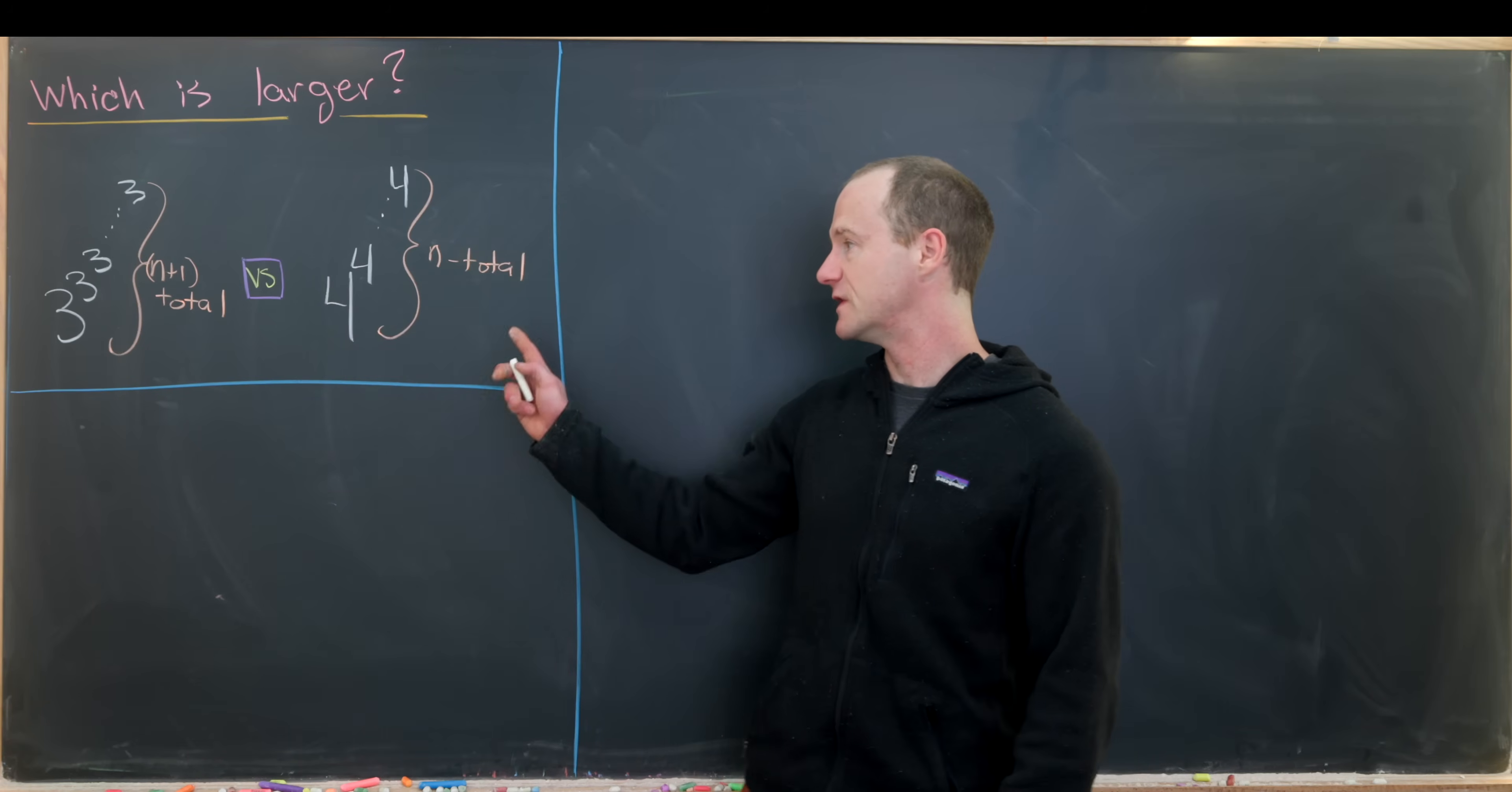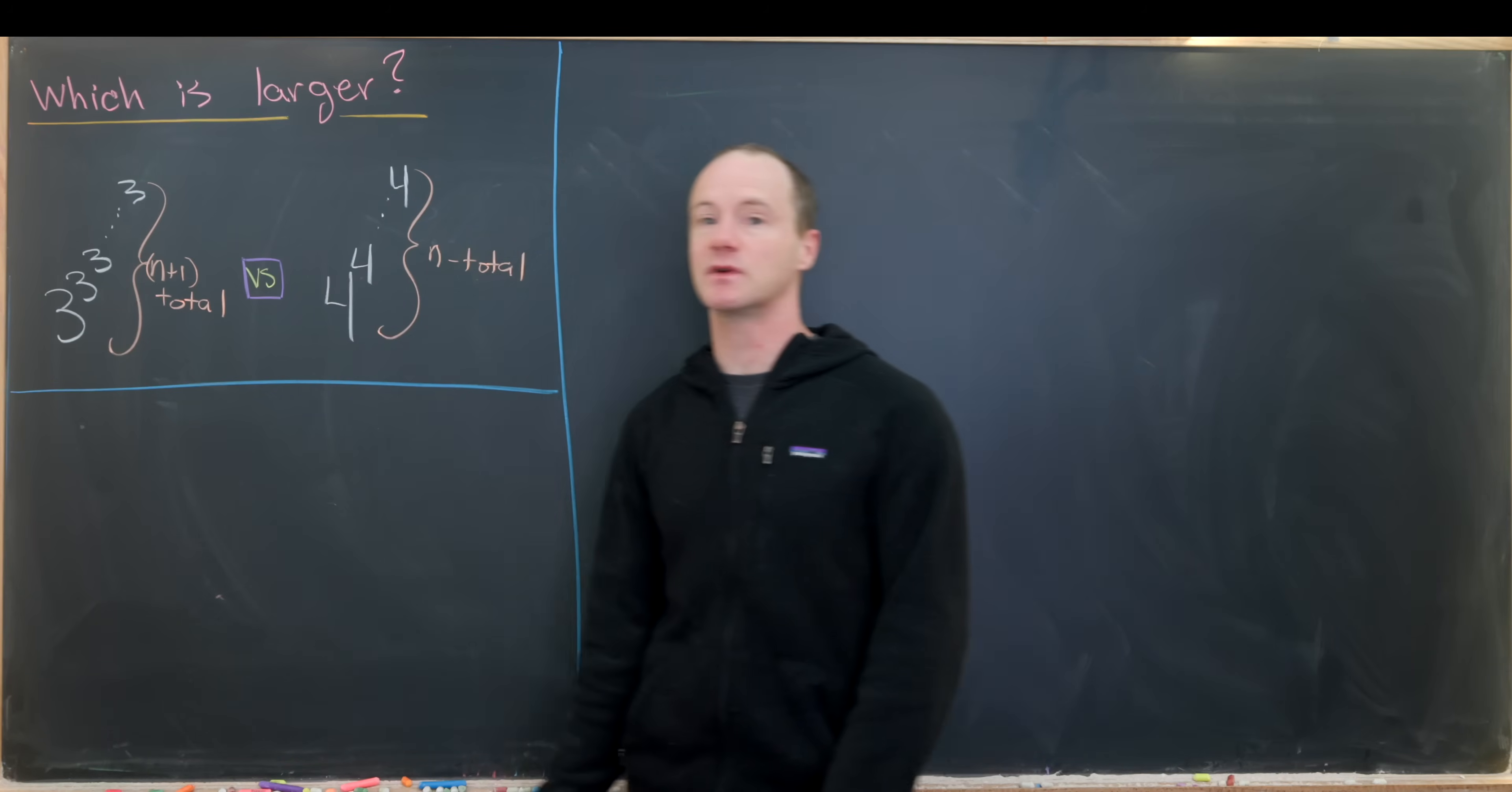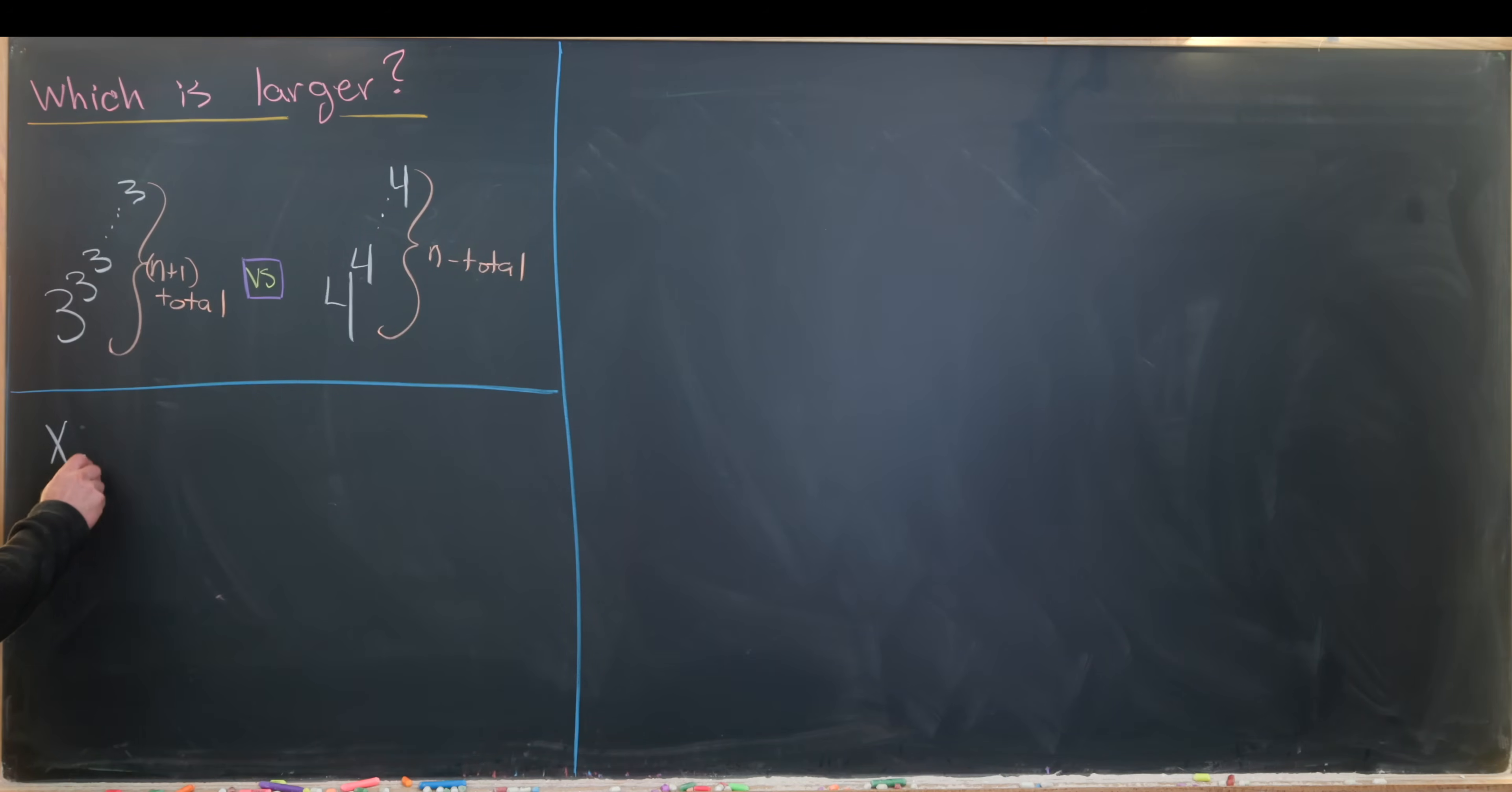So in order to do this, I'm going to introduce some notation. I'll write each of these numbers as elements of a recursive sequence. So let's make the following definitions. I'll say xn is equal to 3 to the 3 and so forth, n plus 1 total times.